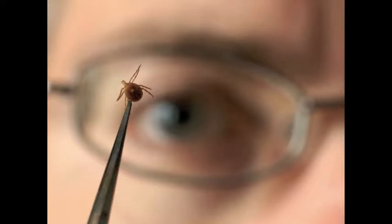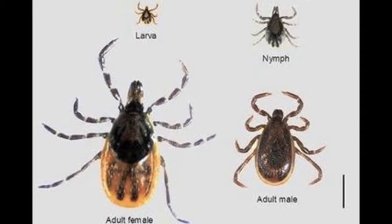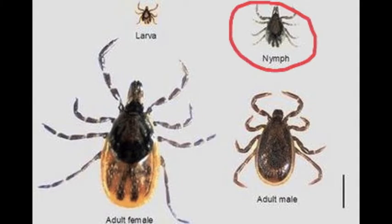Lyme disease is caused by a tick bite that carries the infection. There are different stages of a tick: larva, nymph, and adult. Though the adult ticks are more likely to have the infection, the nymphs are more capable of spreading it because of their size.